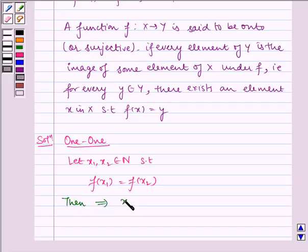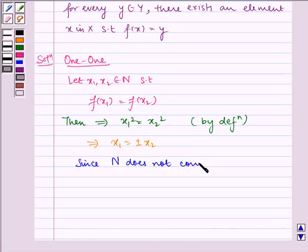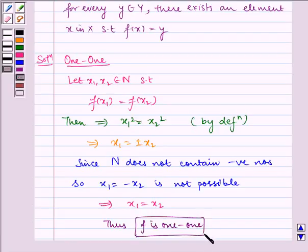Then it implies x₁² = x₂² by definition, which implies x₁ = ±x₂. Now, since N does not contain negative numbers, so x₁ = -x₂ is not possible. Therefore x₁ = x₂. Thus f is one-one.